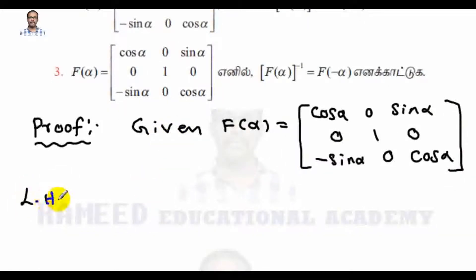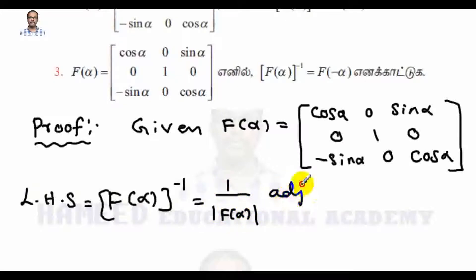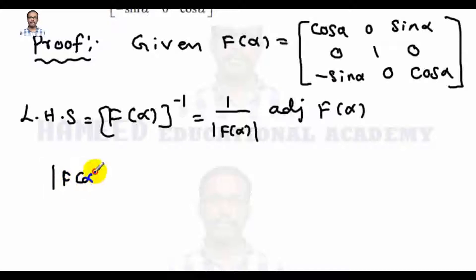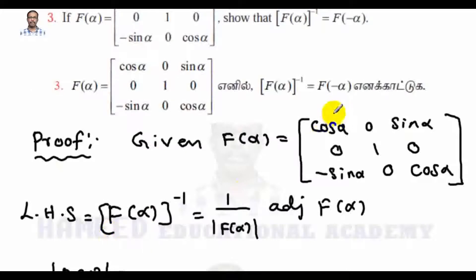The left-hand side is f(α) inverse, which equals one over determinant of f(α) times adj f(α). So first we have to find the determinant of f(α). For a 3×3 matrix, the default signs are: first row plus, minus, plus; second row minus, plus, minus; third row plus, minus, plus.